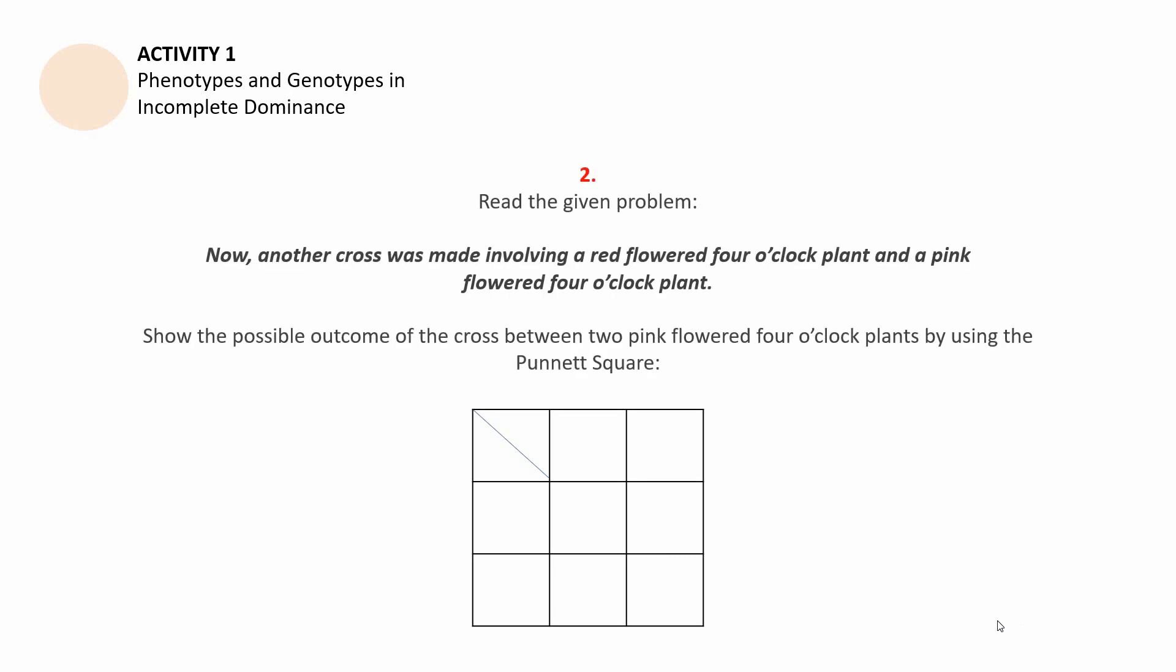Read the given problem. Now, another cross was made involving a red-flowered 4 o'clock plant and a pink-flowered 4 o'clock plant. Show the possible outcome of the cross between two pink-flowered 4 o'clock plants by using the Punnett Square. I will give you a moment to finish this part of the activity. If you have decided to continue, let us now move on.